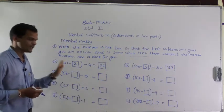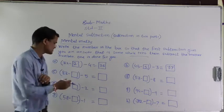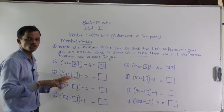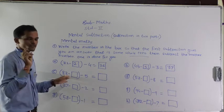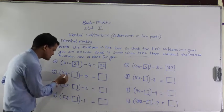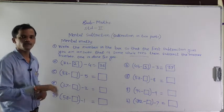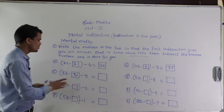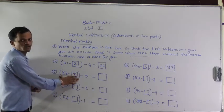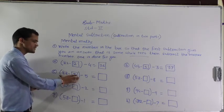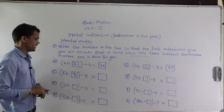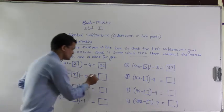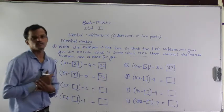Next: 83 minus blank minus 5. Which number should be subtracted from 83 so you get the whole ten? If we subtract 3 from 83, we will get 80, and 80 is the whole ten. So subtract 3 from 83 to get 80, then subtract 5 from 80. 80 minus 5 equals 75.